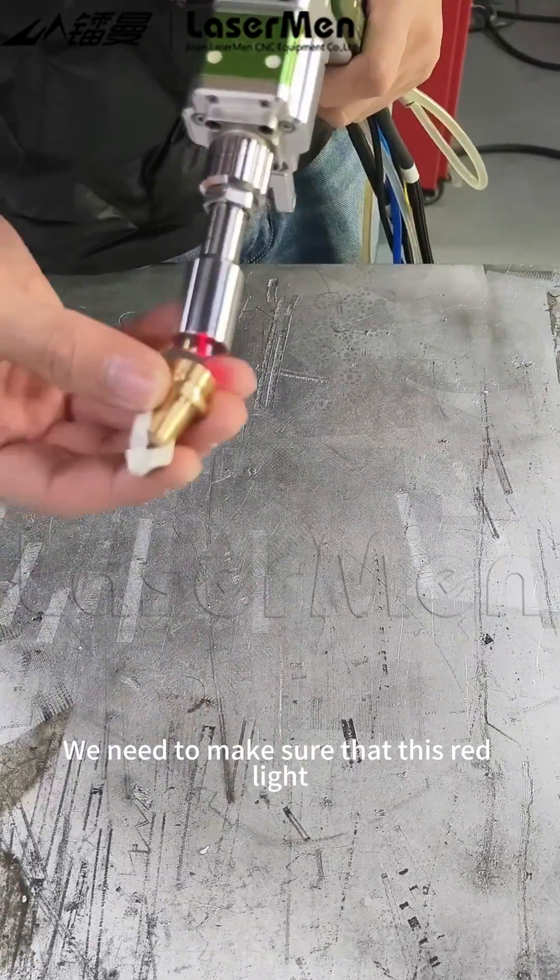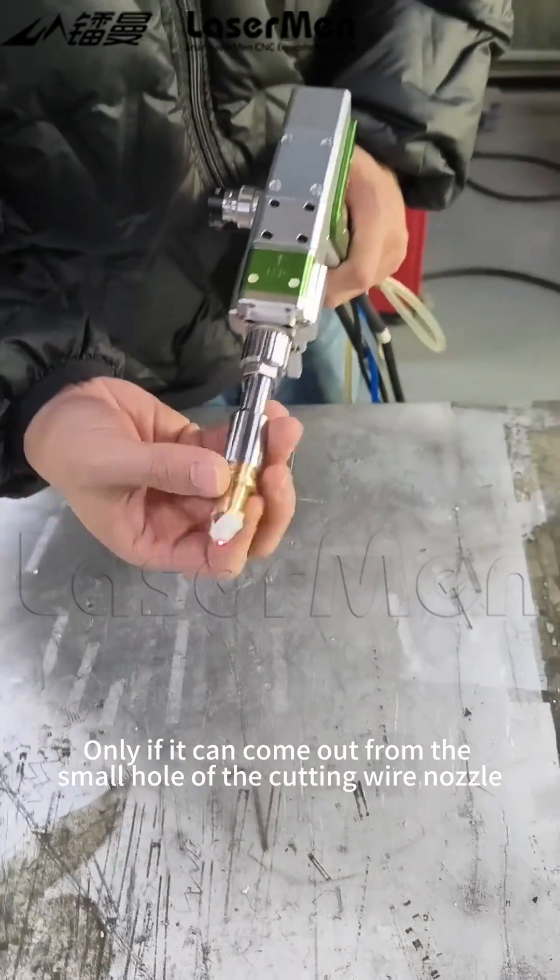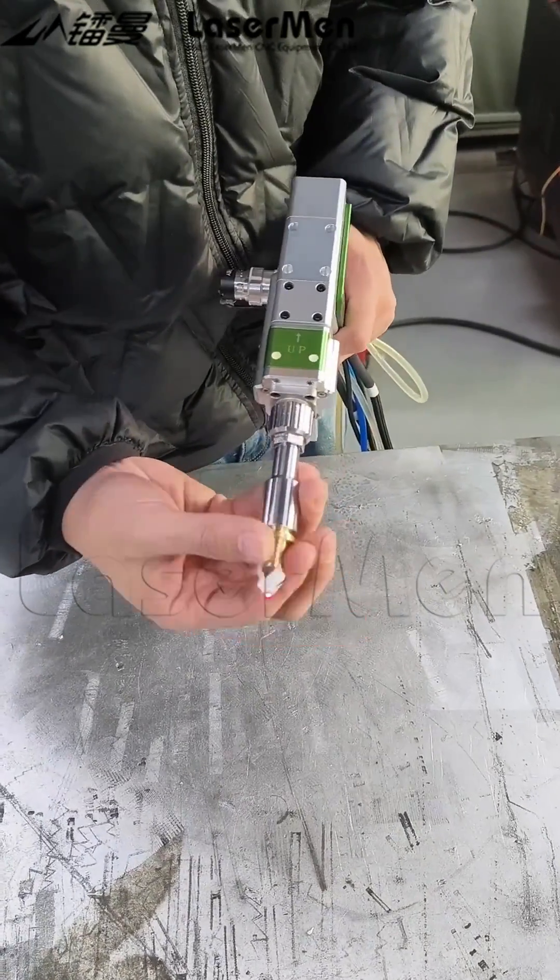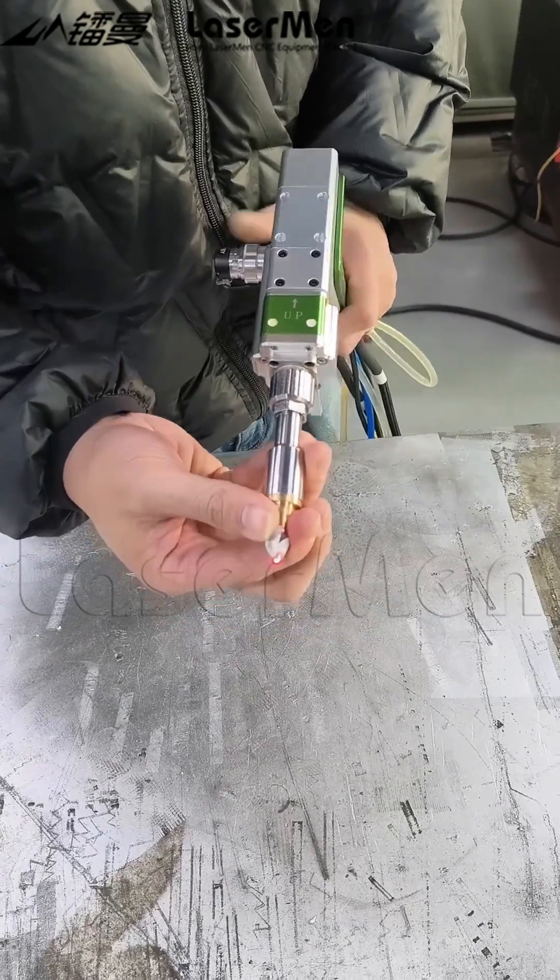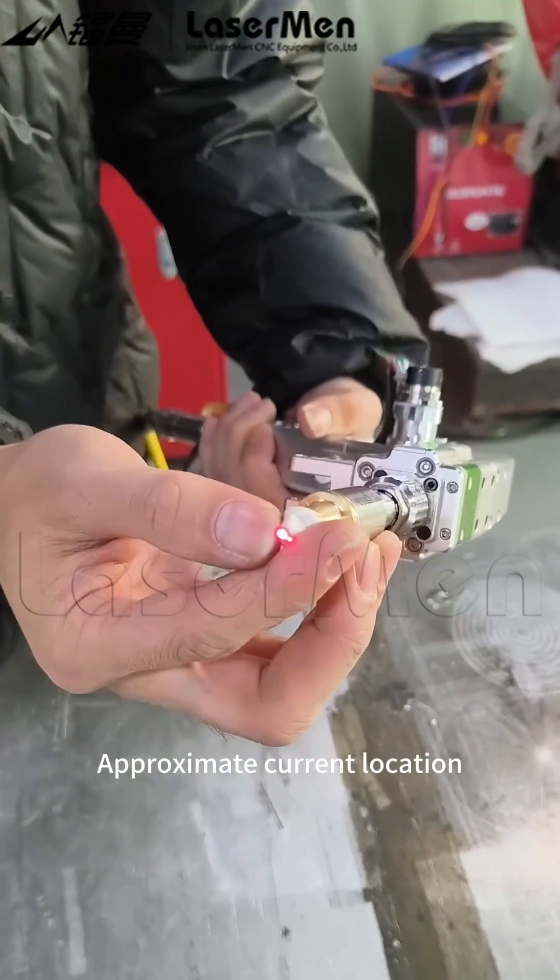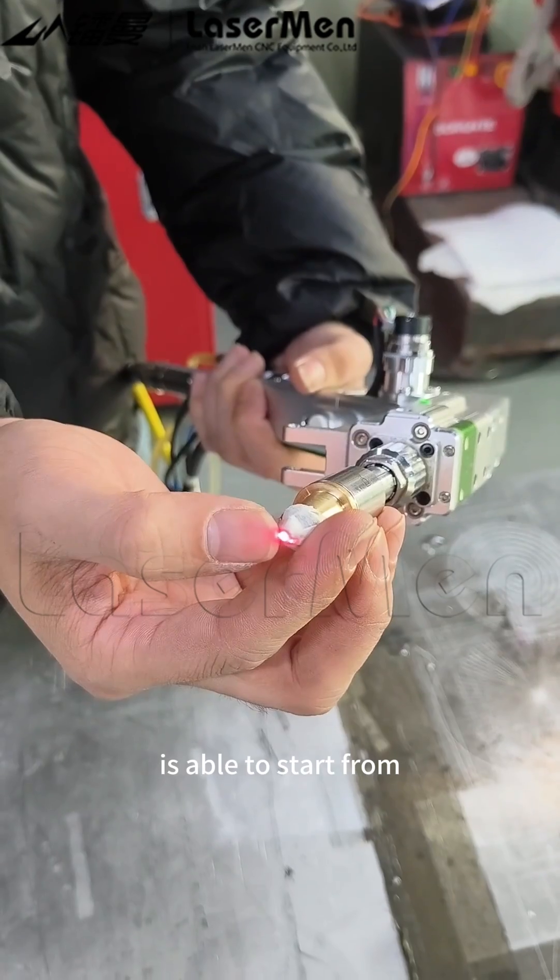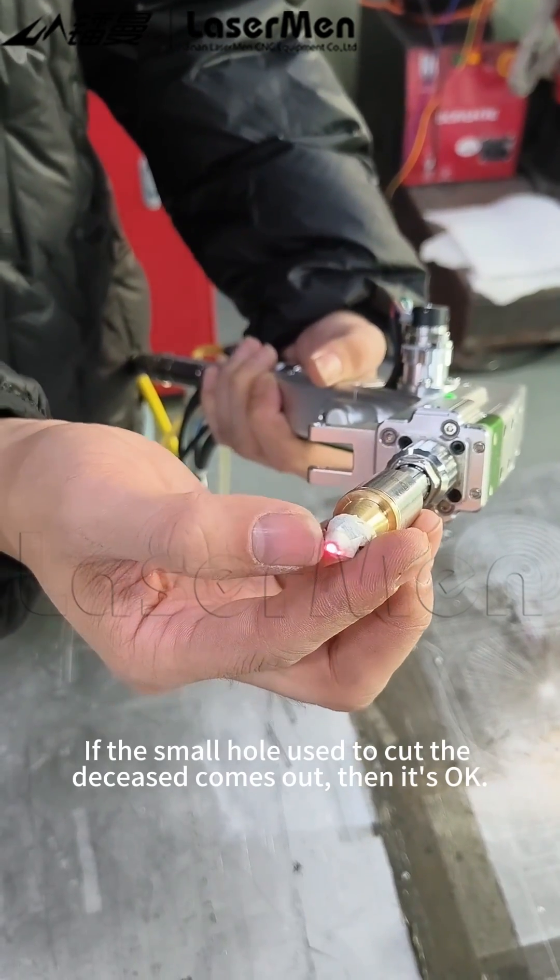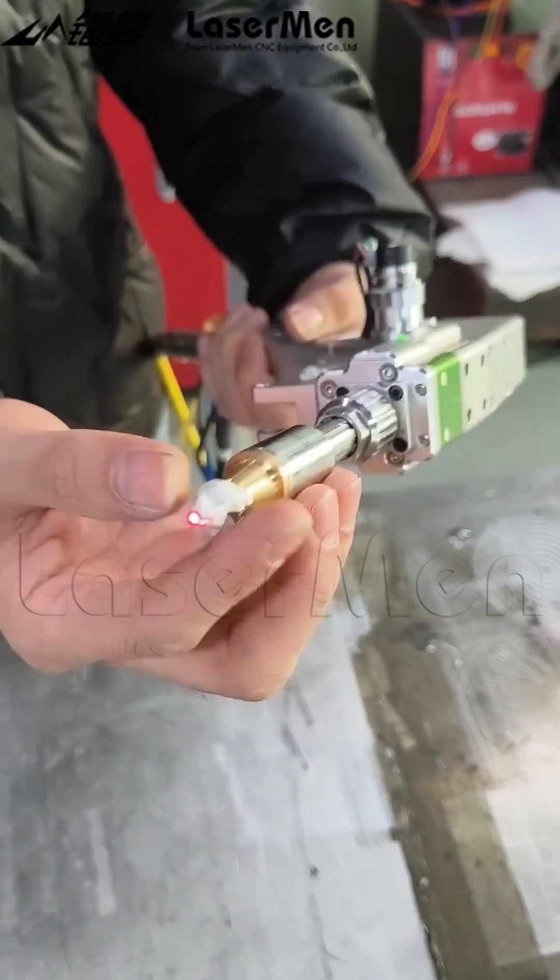We need to make sure that this red light can come out from the small hole of the cutting wire nozzle. Approximate current location. This red dot is able to start from. If the small hole used to cut the deceased comes out, then it's okay.